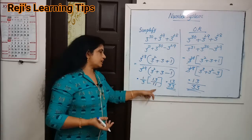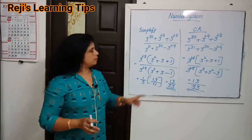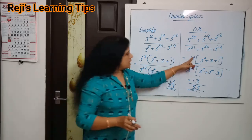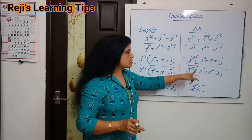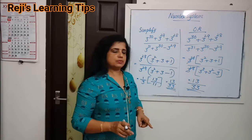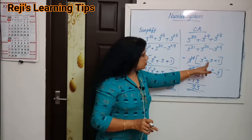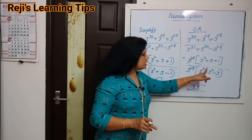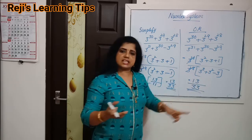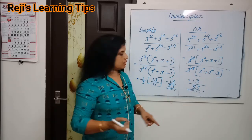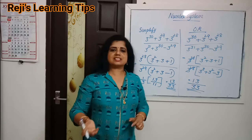So the answer is 13 divided by 33. We have 3 raise to 28 times 3 square plus 3 plus 1, divided by 3 cube plus 3 square minus 3, giving 13 divided by 33.